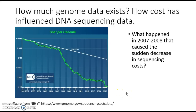First of all, just how much genome data exists, and how has the cost of DNA sequencing affected the amount of genome data? Here is a graph posted at the website indicated in the figure. It's produced by the NIH, specifically by their Human Genome Project research site. It shows time across the bottom axis and cost per genome, focused on the human genome, which is about 3 billion base pairs in size, or 3 gigabase pairs, or 3,000 megabase pairs.